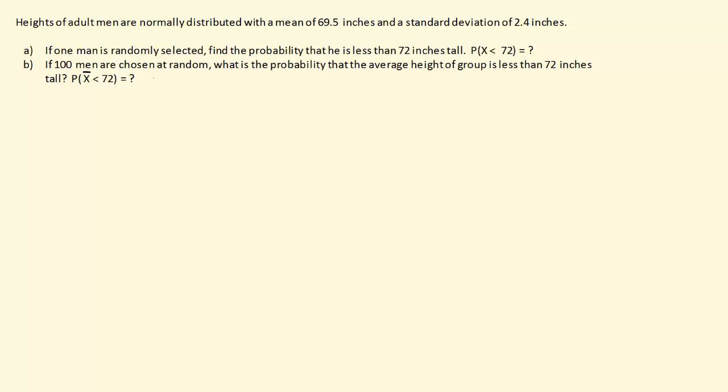The first thing we want to figure out is if we go out and just randomly choose one adult male, what is the probability that that person is going to be less than 72 inches tall. This might be important because let's say you are designing doorways for a bus or an airplane and you want to make it big enough such that the majority of men can walk through it without having to duck. With a normal distribution the average is right in the middle, so only 50% of all men could get through that doorway without ducking.